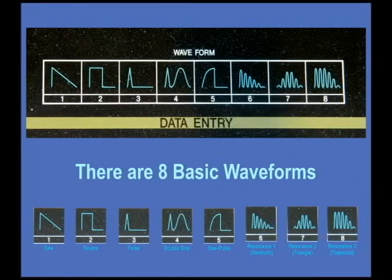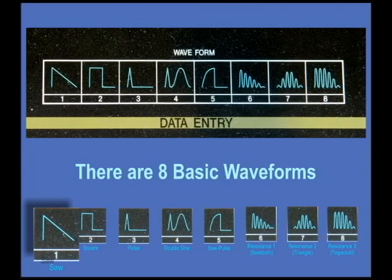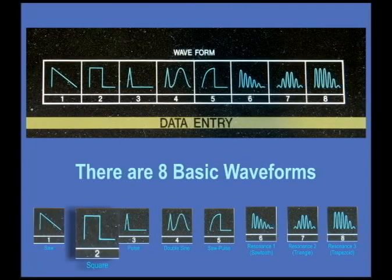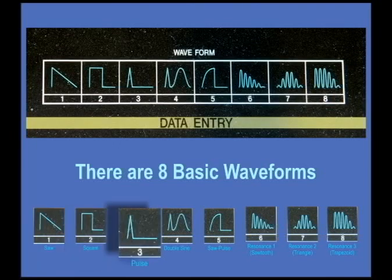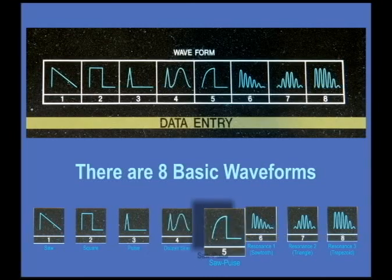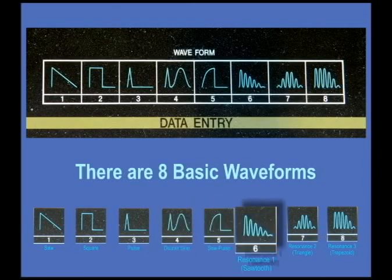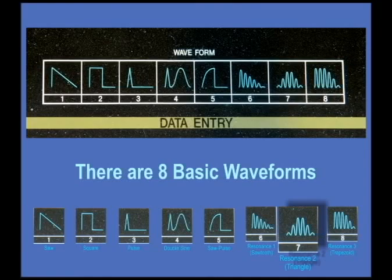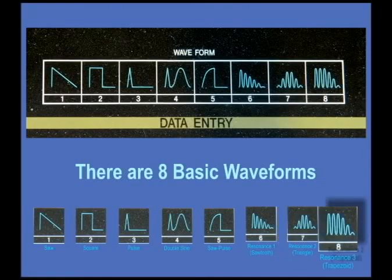We've got eight basic waveforms: a saw wave, a square wave, a pulse wave, a double sine, a saw pulse, a resonant saw, a resonant triangle, and a resonant trapezoid.